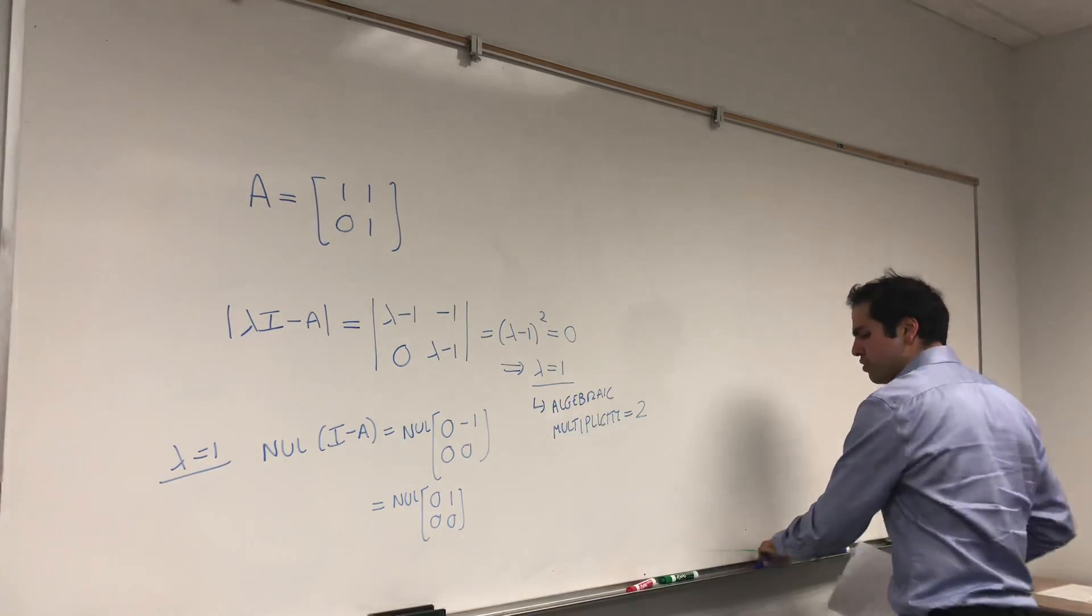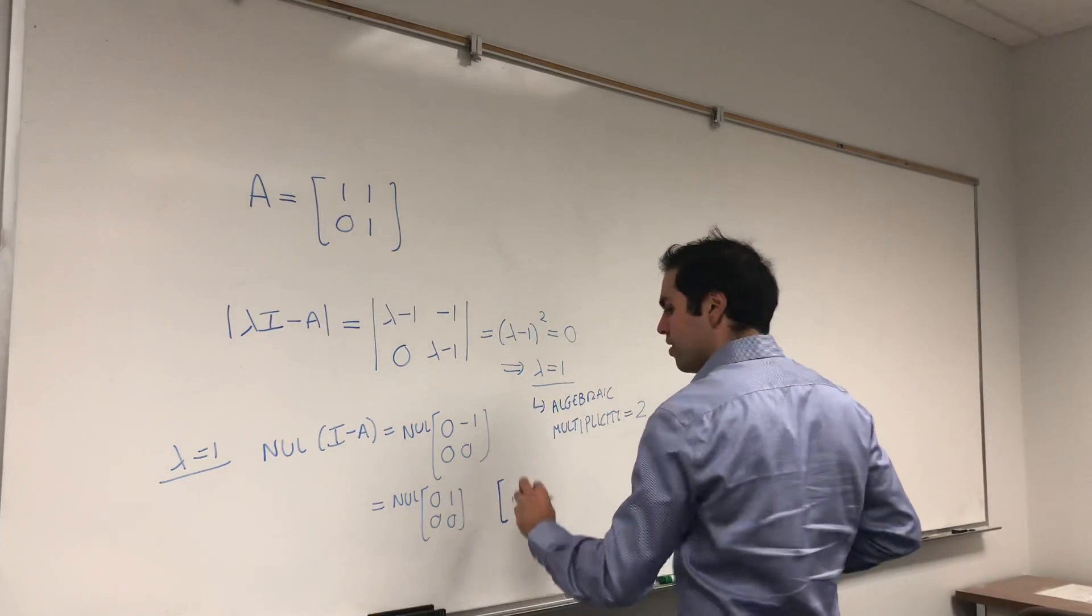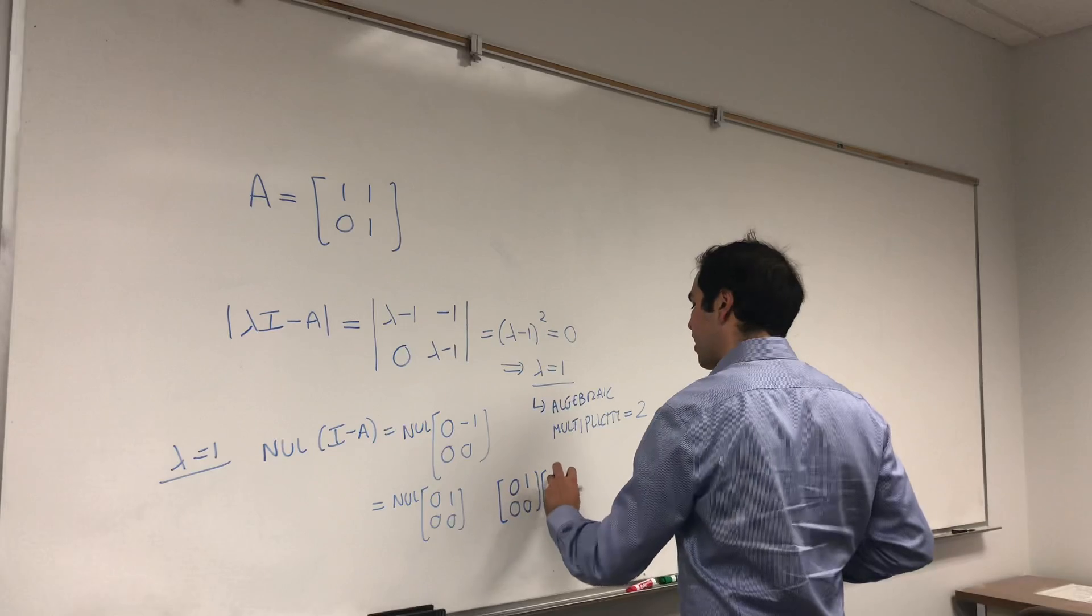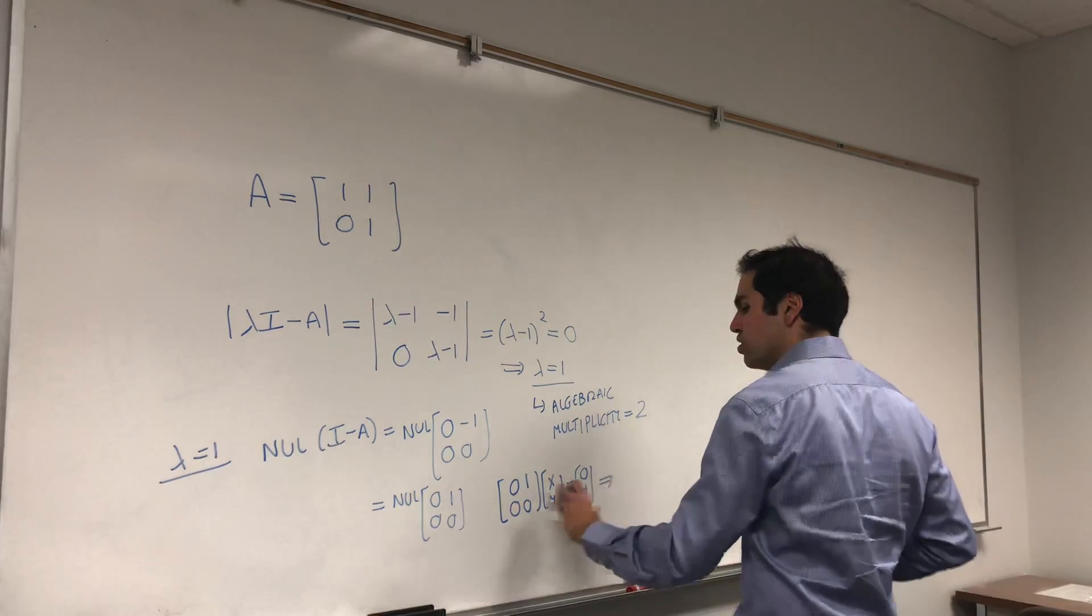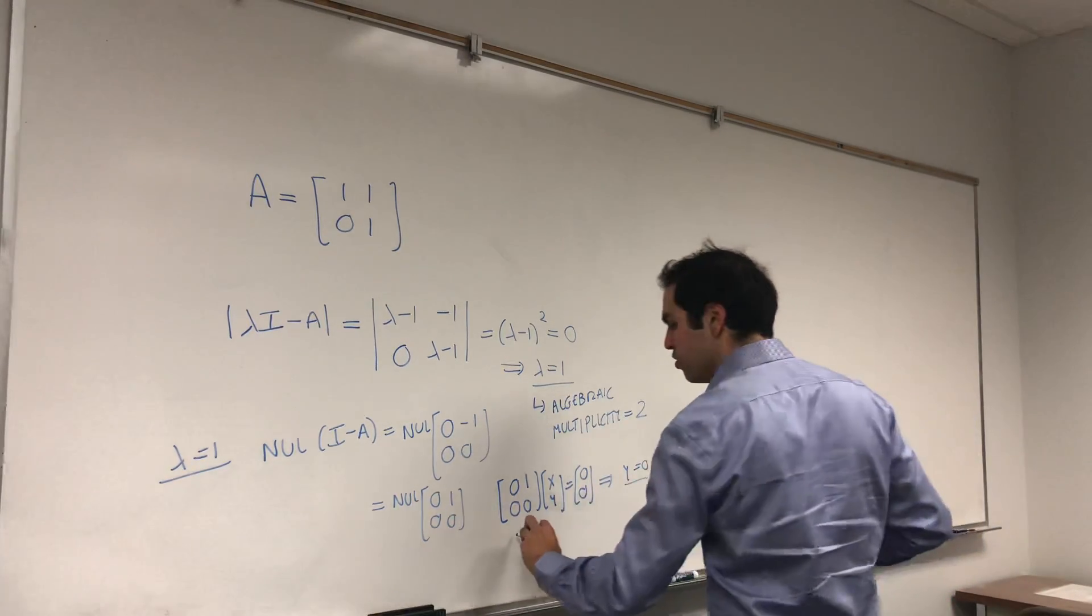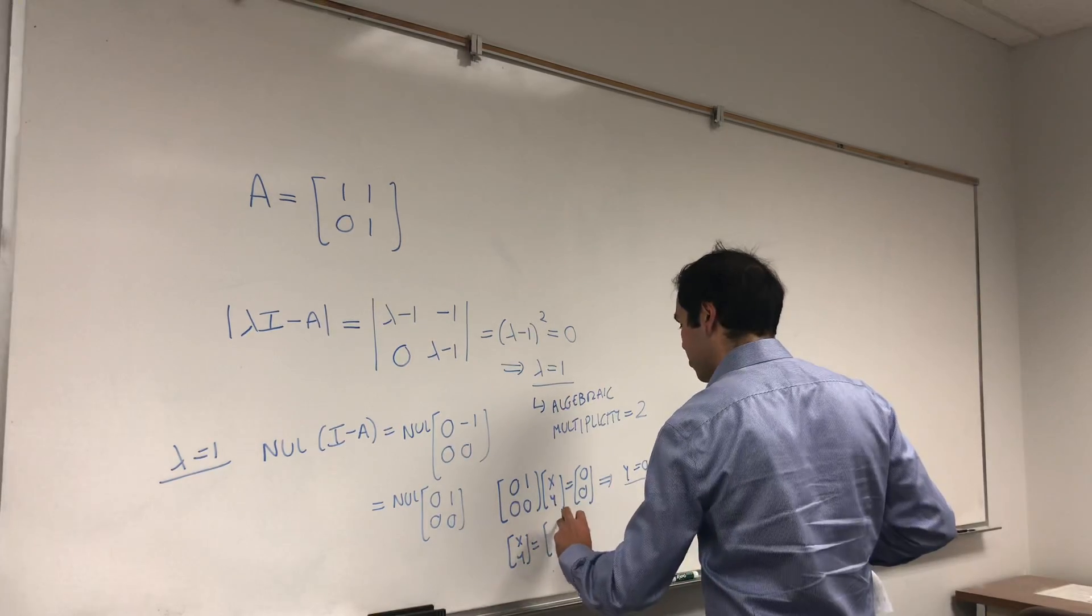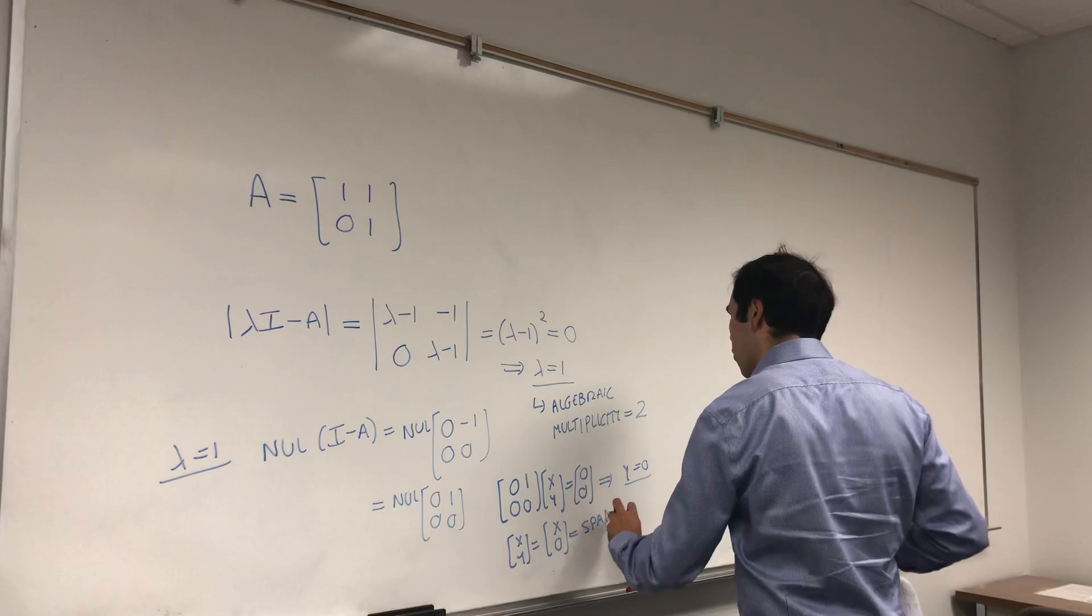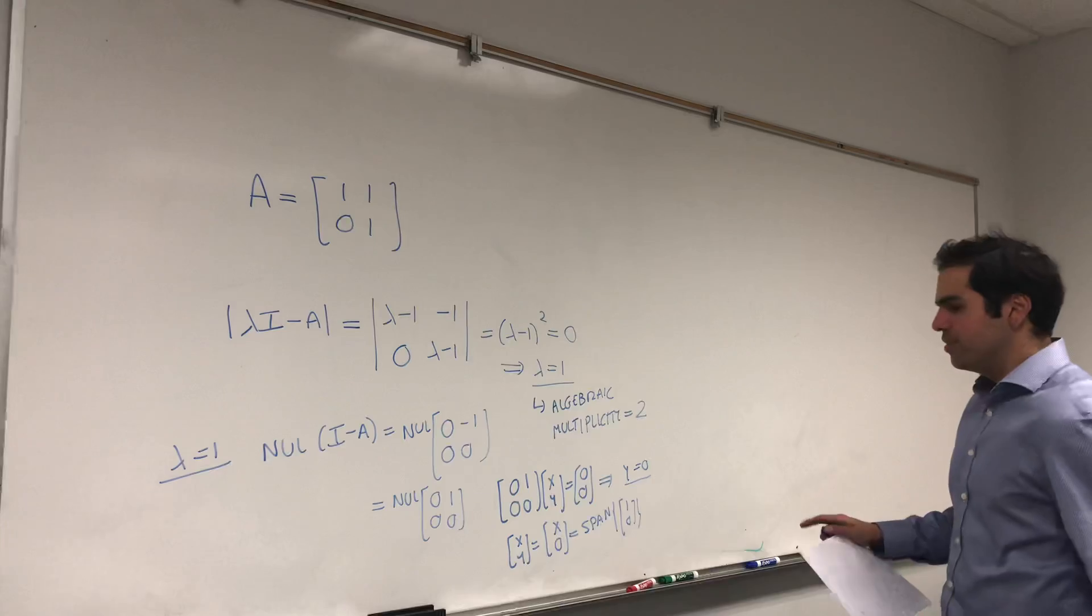Now what is this? Again, I feel null spaces are not so trivial to deal with, but let's just multiply 0, 1, 0, 0 by x, y equals 0, 0. Then you just get y equals 0. And so your vector x, y is just x, 0, and that's the span of 1, 0.